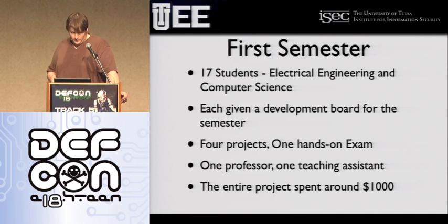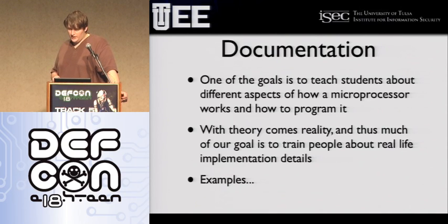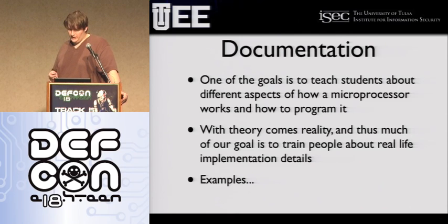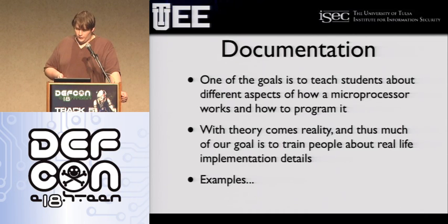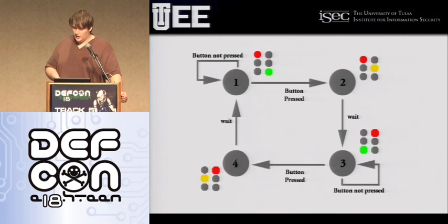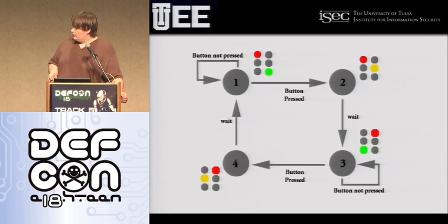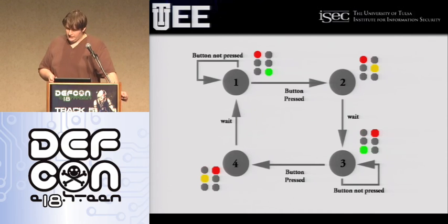We spent around a thousand dollars developing all this and almost the entire dollar volume was spent building printed circuit boards. We've got a bunch of documentation online about the kit. We are not releasing a lot of example code specifically because we're teaching a course — if we release a lot of example code, students can just change a few things and turn it in. This is some of the documentation we've developed — an example is a state machine diagram for one of the accessory boards we've built, which is simply emulating a traffic light to teach how a state machine works.